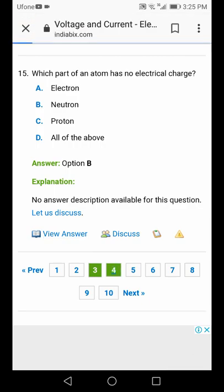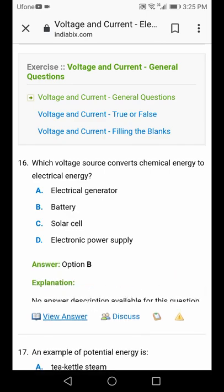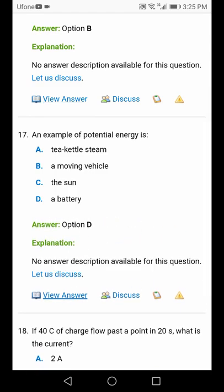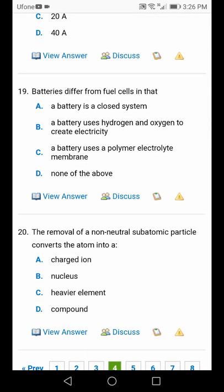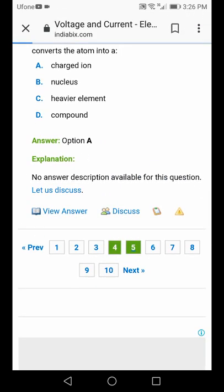Which voltage source converts chemical energy to electrical energy? Battery. Example of potential energy with no movement: battery has no movement. If 40 coulombs of charge passes a point in 20 seconds, what is the current? I equals Q by T: 40 by 20 is equal to 2 ampere. The role of non-neutral subatomic particle converts the atom into an ion.